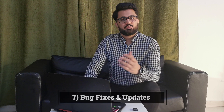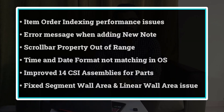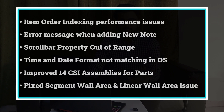PlanSwift has also fixed a number of bugs in this version, including item ordering, error messages, scroll bar, property time and date, a fixed segment for wall area and linear, and part and assembly connections. That was a quick overview of PlanSwift's latest release.